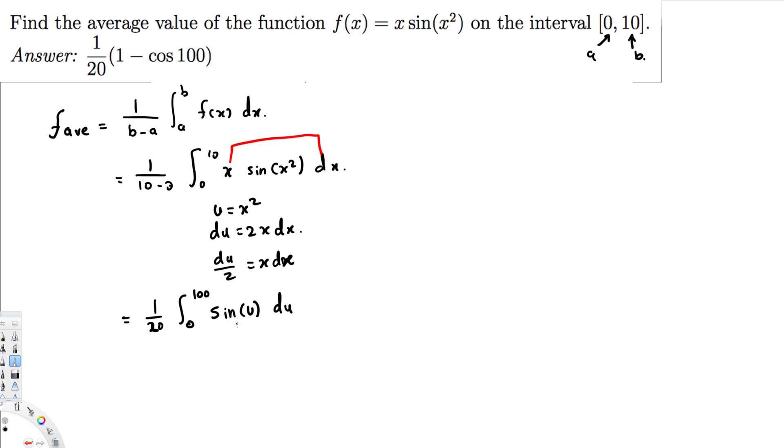So now we can go ahead and integrate this one. If we integrate, that's going to give us 1 over 20. Integration of sin(u) is going to be minus cos(u), so this is going to be minus cos(u) right here going from 0 to 100.